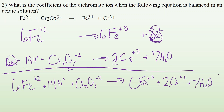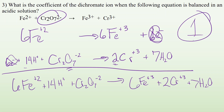That's number three. The question asks for the coefficient of the dichromate ion — and that coefficient is one. So the final answer is one.